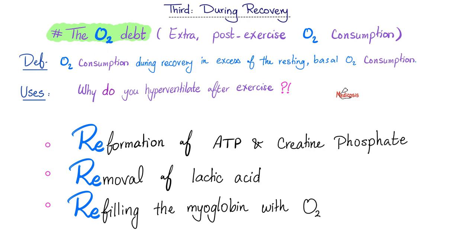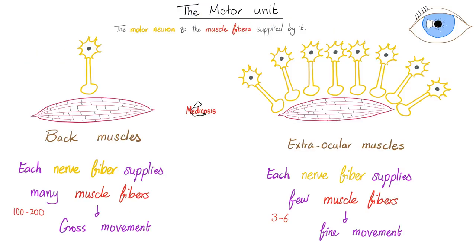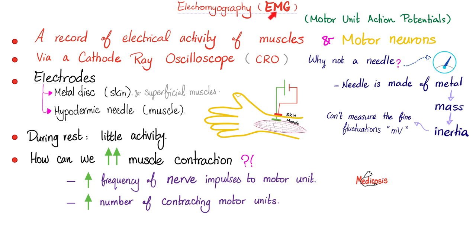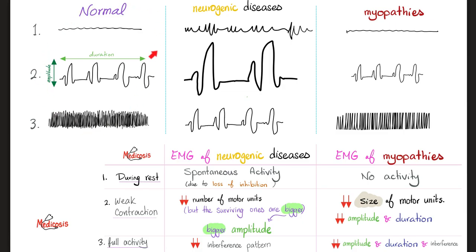The motor unit is the nerve fiber and the muscle fibers supplied by that nerve fiber. Not all motor units are created equal. EMG is not just for muscles — it's for muscles and the nerve fibers supplying them. EMG shows the difference between normal, neurogenic disease, and myogenic disease.